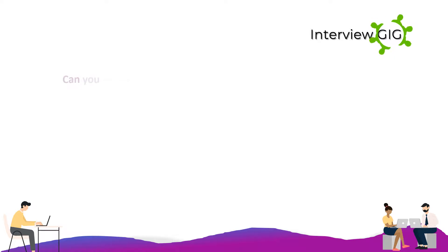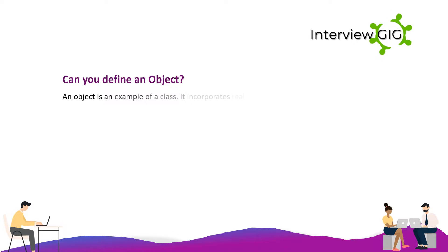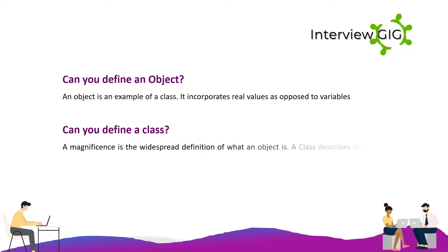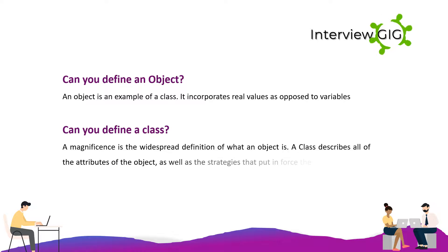What is an object? An object is an instance of a class. It holds real values as opposed to variables. What is a class? A class is the general definition of what an object is. A class describes all of the attributes of the object, as well as the methods that implement the behavior of the member object.